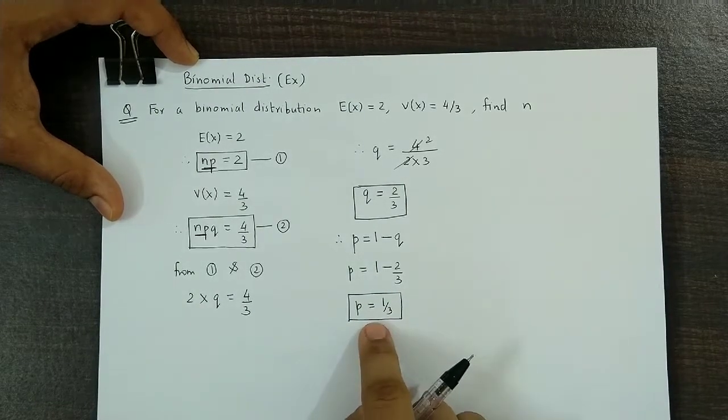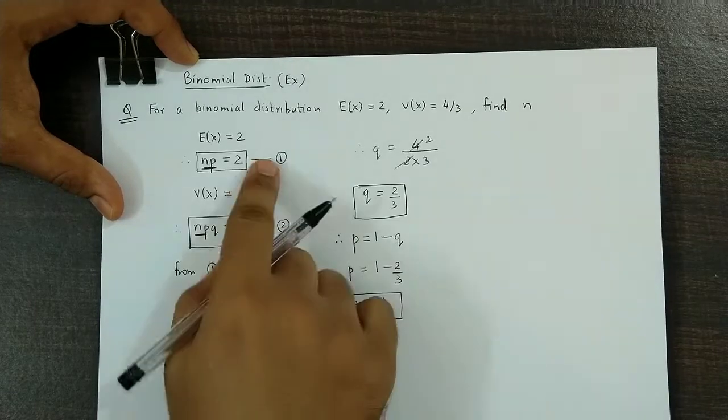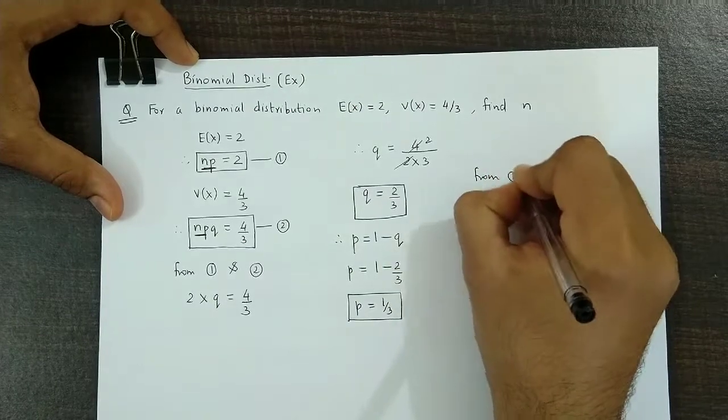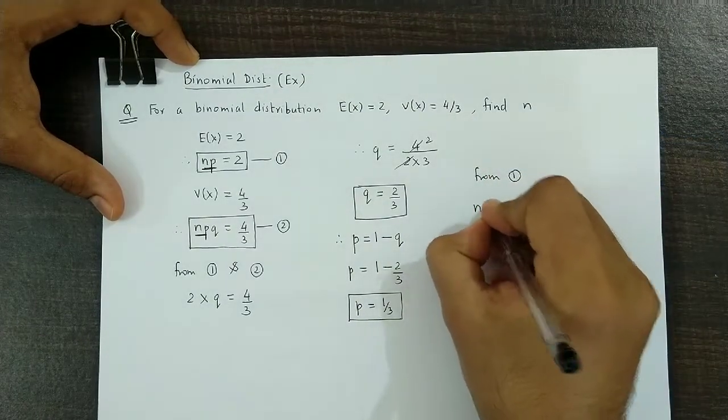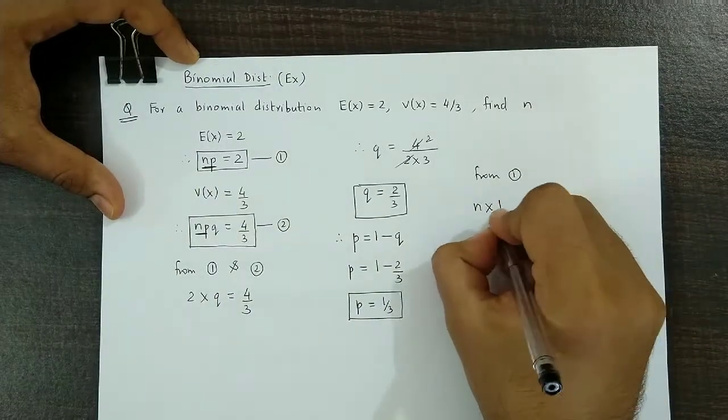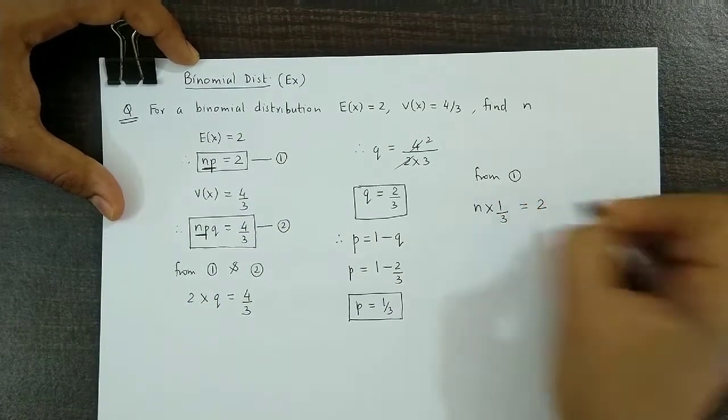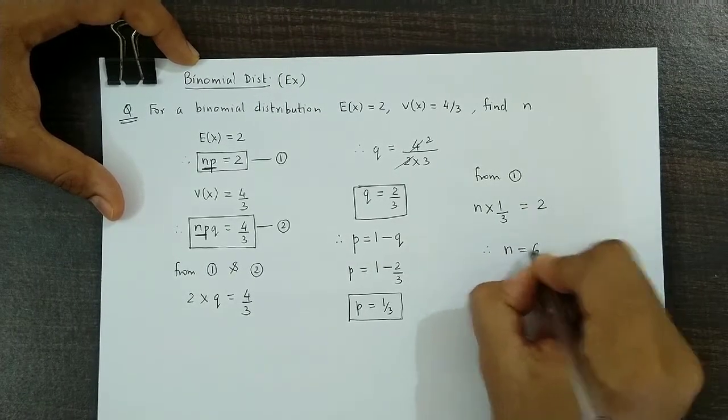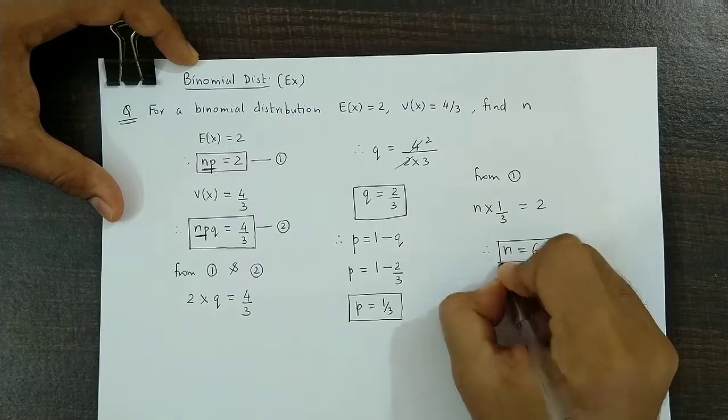Now with the help of P we could obtain N from equation 1. From equation 1 we could say N times P, now P is 1/3, so N times 1/3 is equal to 2. Therefore the value of N is equal to 6.